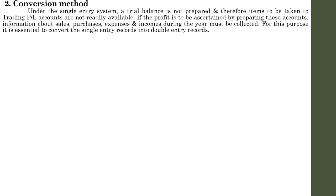For this purpose, it is essential to convert the single entry records into double entry records. Conversion of single entry into double entry involves complete journalizing, posting to the ledger, balancing of each ledger account, and finally preparation of a trial balance. But in actual practice and for examination purposes, we need not prepare the entire journalizing, preparation of ledger, and trial balance.